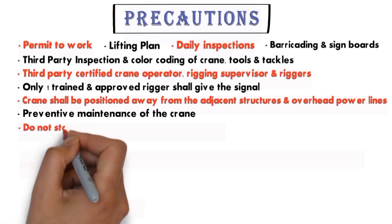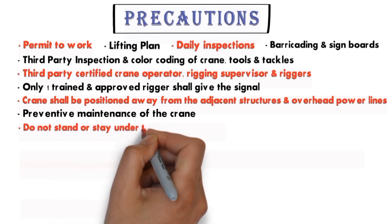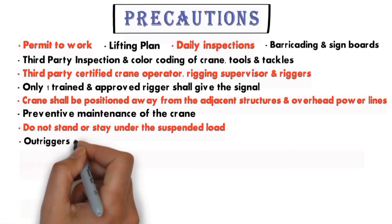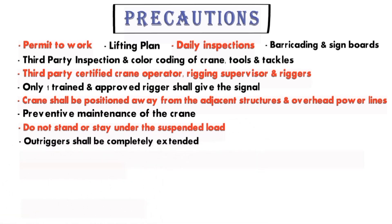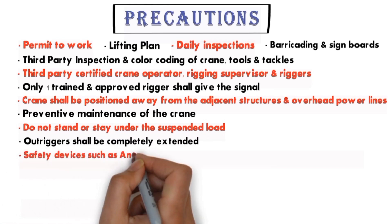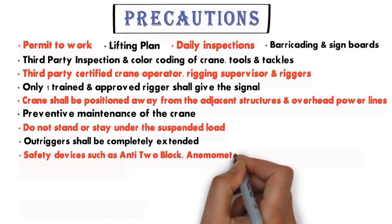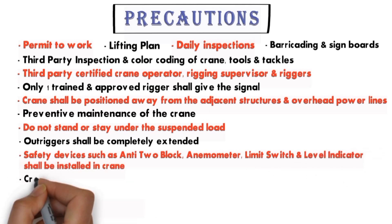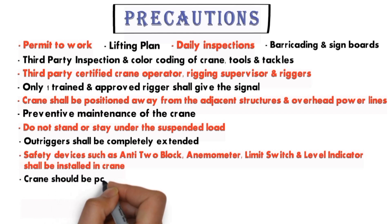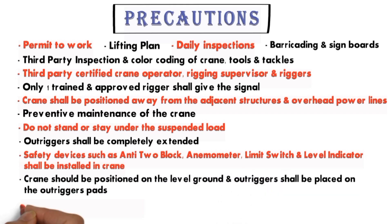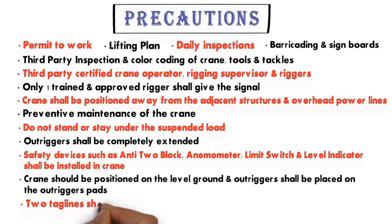When the load is being carried by crane, nobody should come under the suspended load. When positioning a crane for lifting, the outrigger must be completely extended. Safety devices such as the anti-two-block device, anemometer, limit switch, and level indicator must be installed and checked to ensure they are functioning properly. Check that the ground level is in good condition and that outrigger pads are used. When lifting any load, use two taglines so that you can control the load.